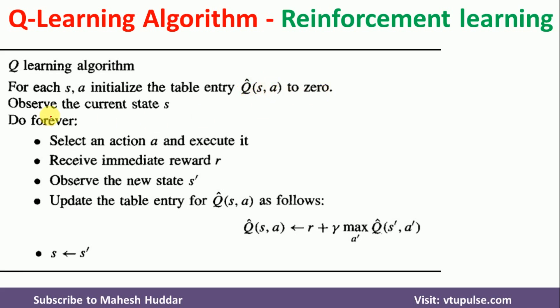Next, we need to observe the current state S. From the available set of states, we select one state and assign it as the current state. For that current state, we need to perform the following steps unless and until we reach the goal state.